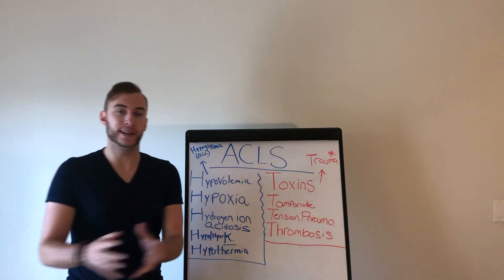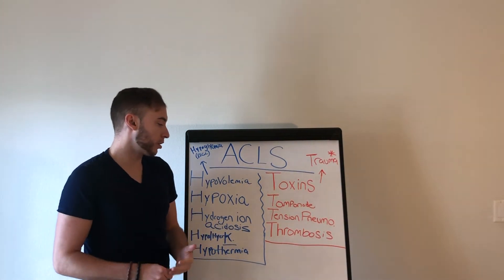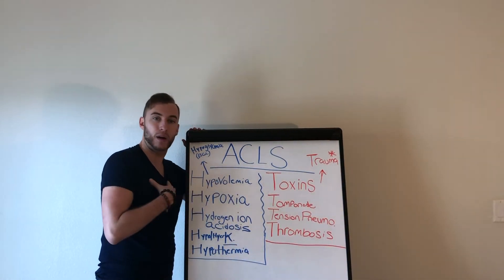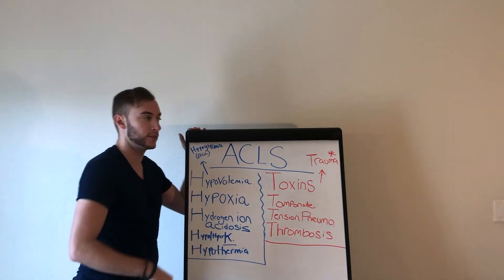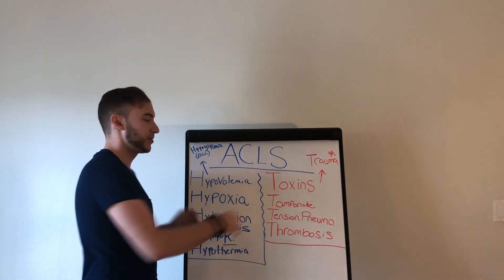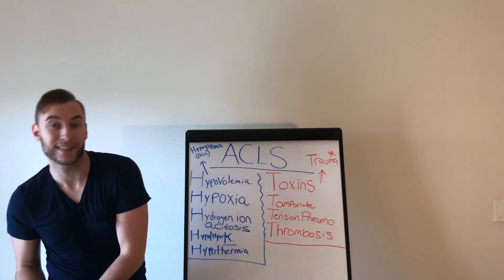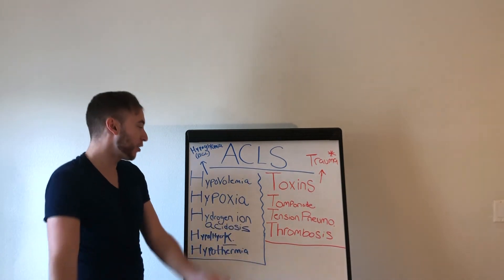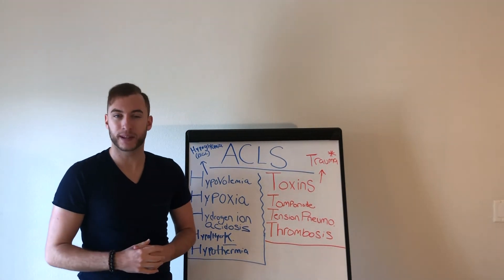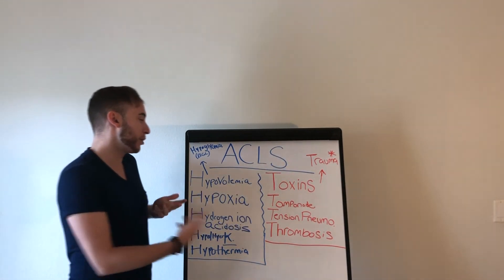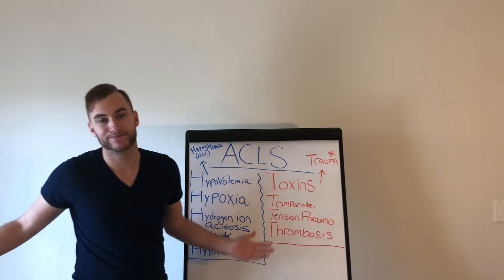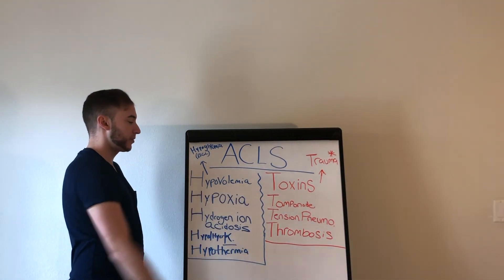Thrombosis — is this an MI or a PE? Could this be it? If you're at a point in the code where you're doing a 12-lead, that's where it comes in. I use H&Ts two ways in the field: one is 20 to 30 minutes into a code to make sure we're not missing anything, and the second is if the patient gets ROSC — I want to find out what happened, so I go to my H&Ts. Finally, trauma — am I missing a sneaky head trauma? Did that cause the arrest?